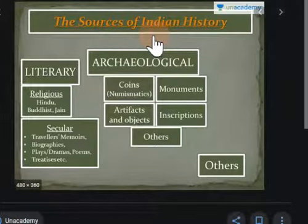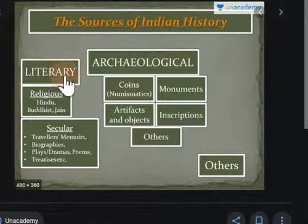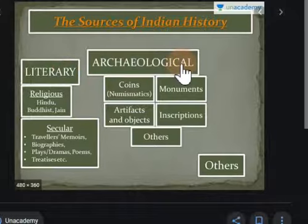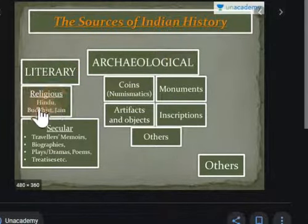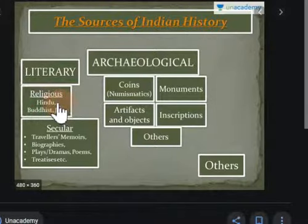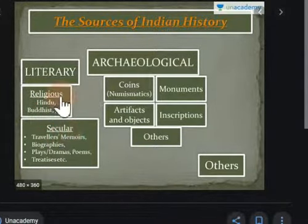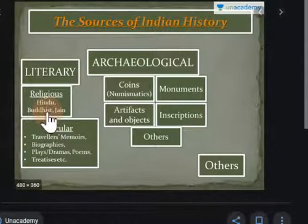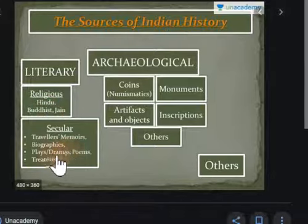The sources of Indian history are divided into two main types: literary sources and archaeological sources. In literary sources, there are religious books and secular sources. Religious books belong to particular religions — for example, the Ramayana, the Quran, the Gita, and the Avesta. These are religious books.